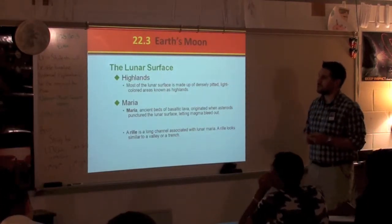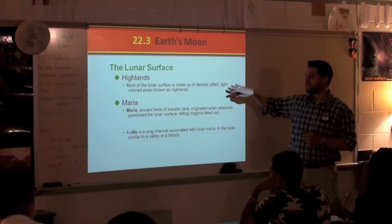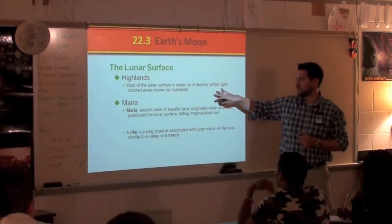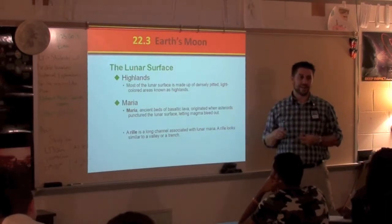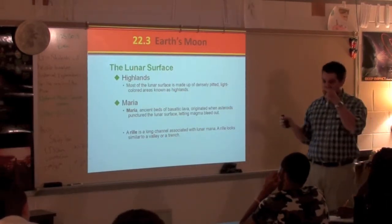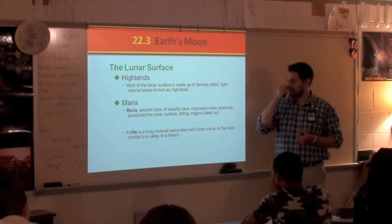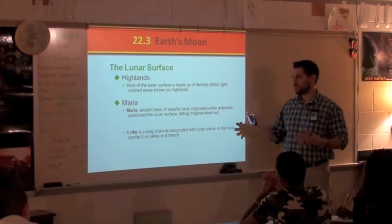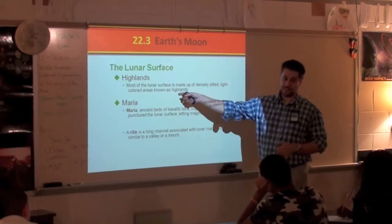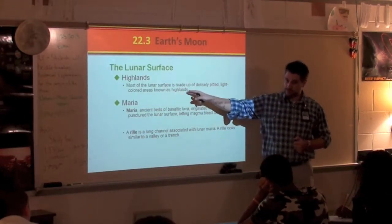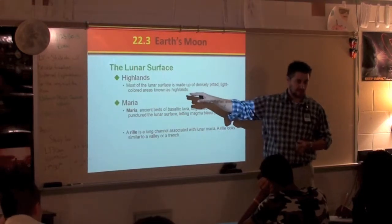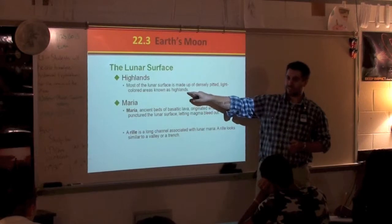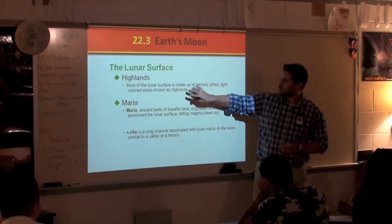There are some features on the moon. First, there are highlands — areas where the land is high, consisting of many previous crater impacts all on top of each other. It looks like mountains, but it's not mountains — it's just tons of crater impacts layered on top of themselves.